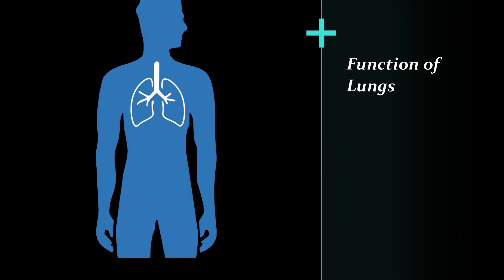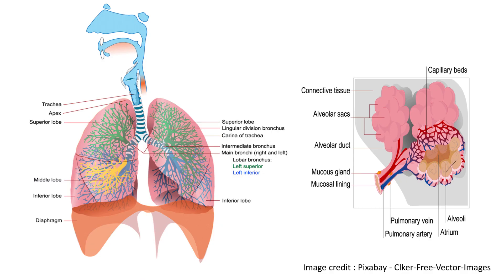Before getting into the infection process, let's see how our lungs function. Each human lung has separate sections called lobes. Air flows via the windpipe or trachea to a large tube-like structure called bronchi, then to smaller tubes called bronchioles, and finally reaches tiny sacs called alveoli. These tiny sacs are covered by capillary vessels that perform oxygen transportation between the blood and the lungs, while CO2 enters the alveoli and blood carries oxygen to the rest of the body.